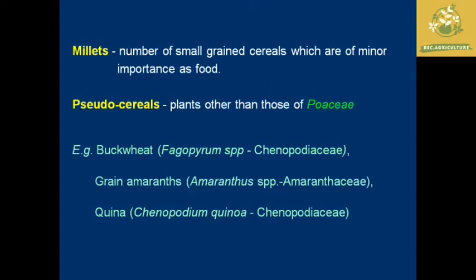Millets are known as small-grain cereals and have minor importance in food at the current age. Pseudo-cereals are cereals not belonging to the family Poaceae — they are placed in other family species. Examples include buckwheat, grain amaranthus, and quinoa, which belong to the families Chenopodiaceae and Amaranthaceae. Because of their absence in the Poaceae family, they are called pseudo-cereals.